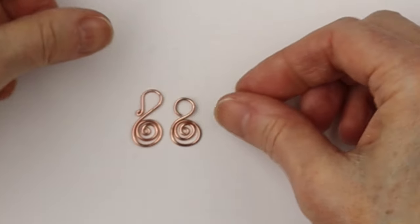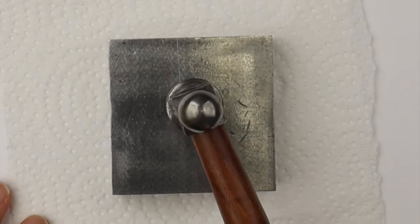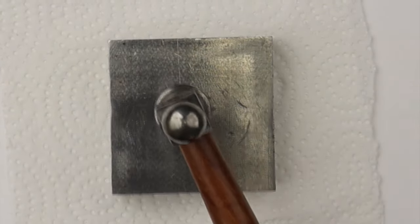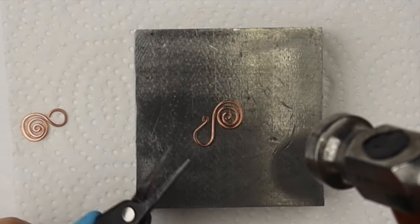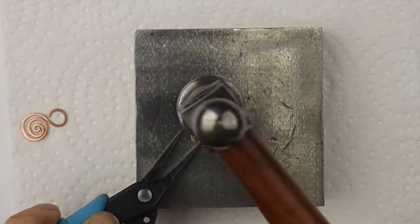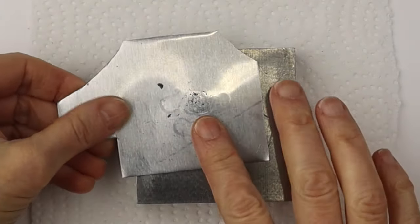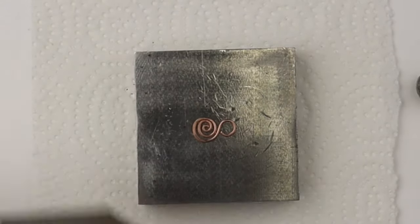These are how the pieces are looking before we flatten them. Then we can hammer them to get them a little bit flat. Flip it over. Another way is to hold the end with pliers and just brush the hammer out a little bit so you don't scuff it.